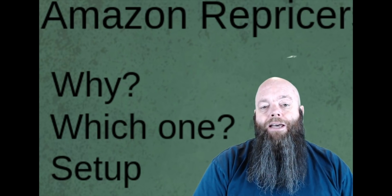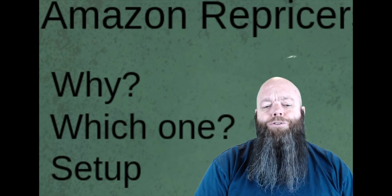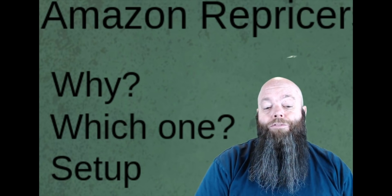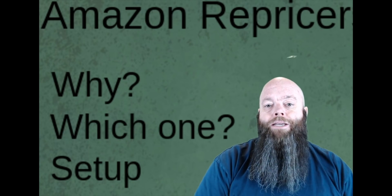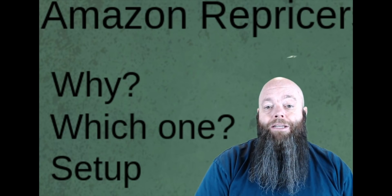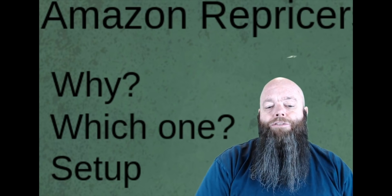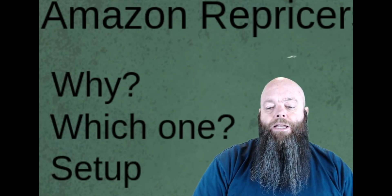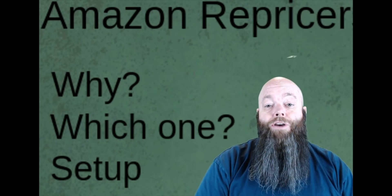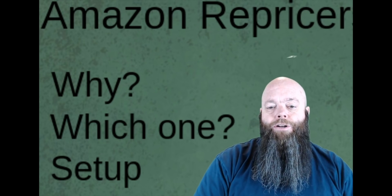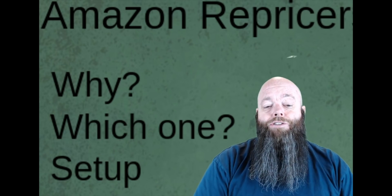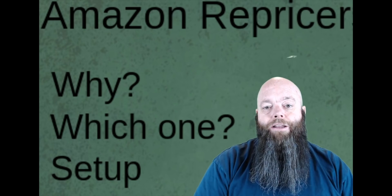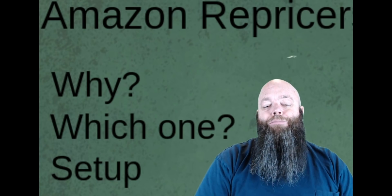Next thing you have to decide is: do you want to reprice against only FBA? Do you want to ignore merchant fulfilled? Do you want to reprice against the buy box no matter who's in it? These are questions you're gonna have to answer yourself. Most of them have set up strategies that you can just choose and just look through the strategy to make sure it is what you want. I generally set up a custom one.